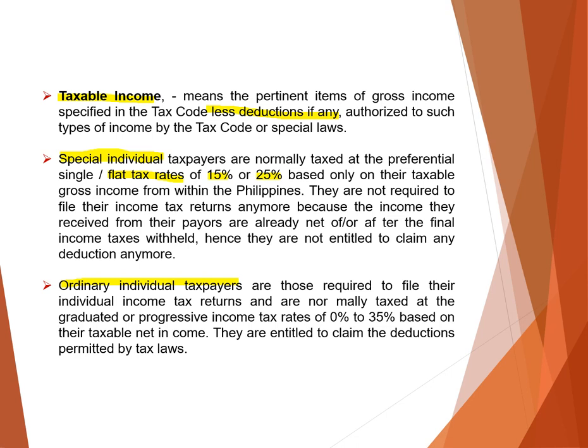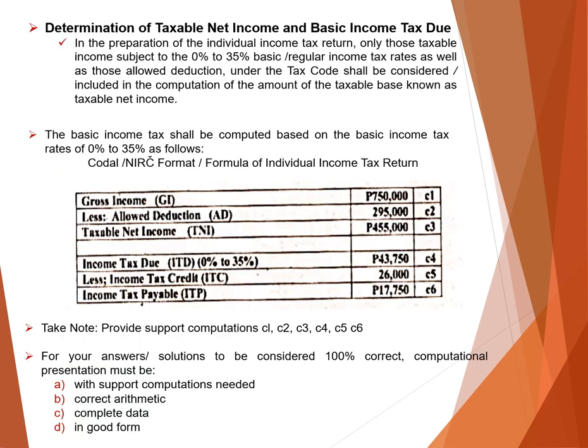Ordinary individual taxpayers are required to file the income tax return (ITR) and are normally taxed at the graduated or progressive income tax rate of 0 to 35%. That is the difference between special and ordinary individual taxpayers. Ordinary individual taxpayers are also entitled to claim deductions permitted by tax law, while special individuals are generally taxed on gross income and are not entitled to claim some deductions.